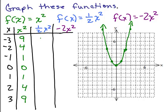What I want you to do is fill out what one half x squared is and what negative 2x squared is, and plot the points for one half x squared on this graph and plot the points for negative 2x squared on this graph. You should get two more parabolas. Put the video on pause and try that.